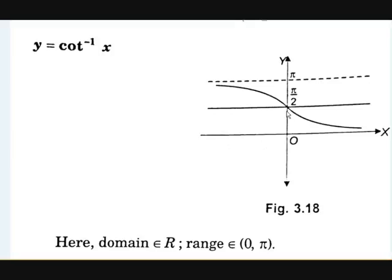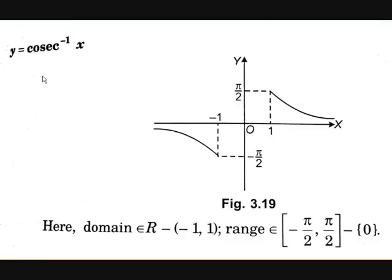Now cot inverse x. As you can see, this is the mirror of tan inverse x, and here the domain is all real numbers. Now this is the graph of y equal to cosecant inverse x. As we know, cosecant inverse x is not defined for the closed interval between −1 and 1, and cosecant is not possible at 0. So the domain of this function is ℝ minus the closed interval [−1, 1], and the range belongs to (−π/2, π/2) minus the set {0}.